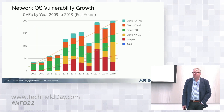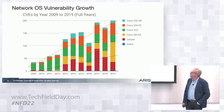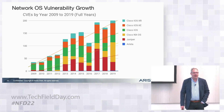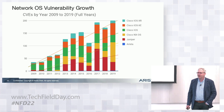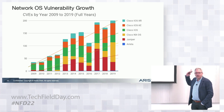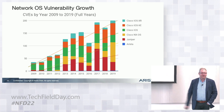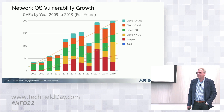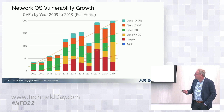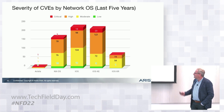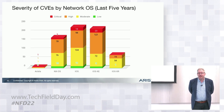They're getting worse every year — about a 16.6% compound annual growth rate. If this was an investment asset, put your money there. It's just getting worse every year; there are more and more defects coming. And the severity of them, broken down by vendor by OS over the last five years, shows a lot of them fall into the critical and high category.